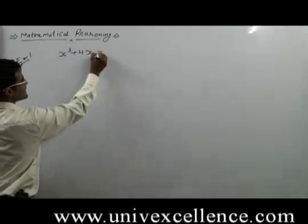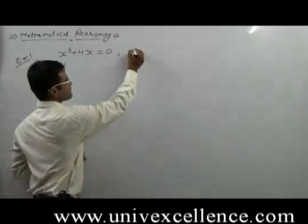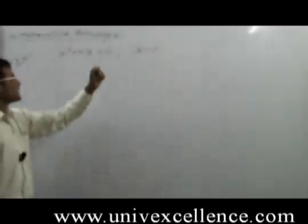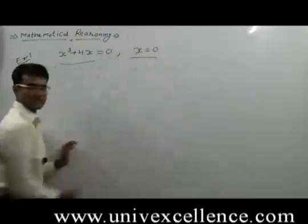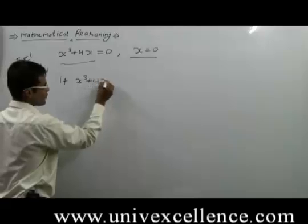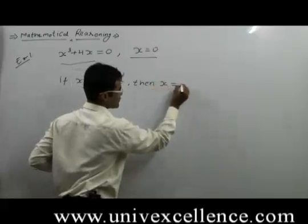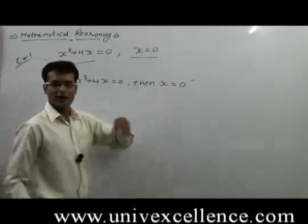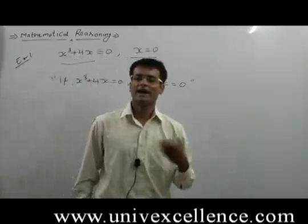We have a question: x cube plus 4x is equals to 0. Now prove that x is equals to 0. Write this as a statement: if x cube plus 4x is equals to 0, then x is equals to 0. This is a statement, and now prove that this statement is true or not. We can use the direct method, contradiction method, and contrapositive method.